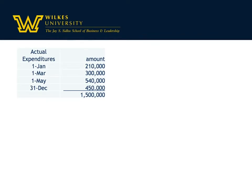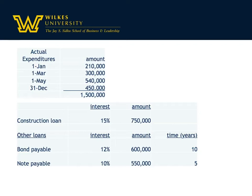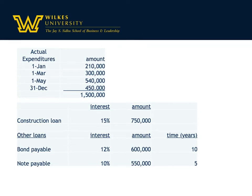Here's the information related to the actual expenditures and the dates the disbursements were made. The company took out a special construction loan just for this. While they spent a million and a half dollars, the construction loan was only for $750,000 — they didn't really need to finance everything. There were other loans: a bond payable for 10 years in the amount of $600,000 at 12% interest, and a five-year note payable in the amount of $550,000 with 10% interest.